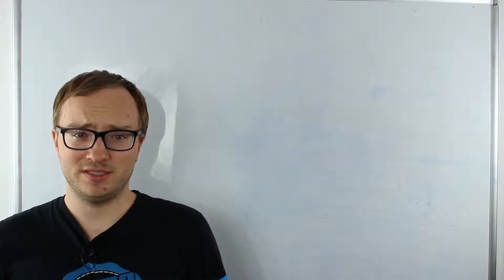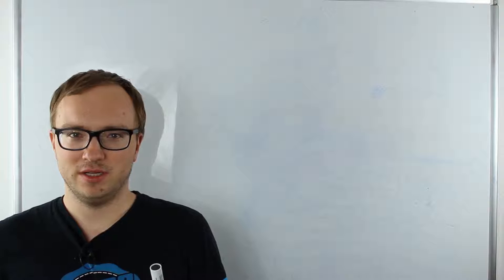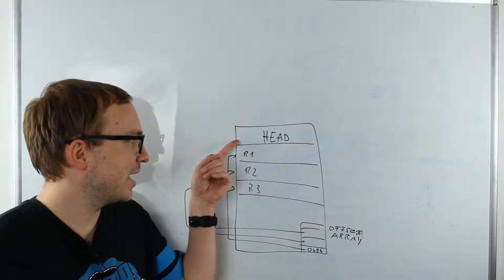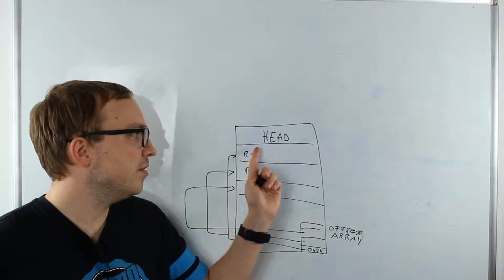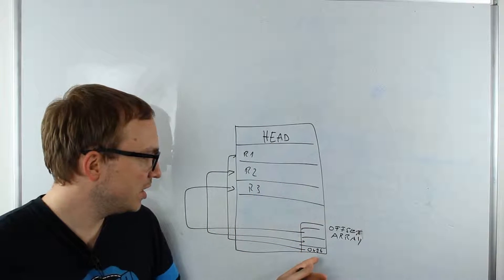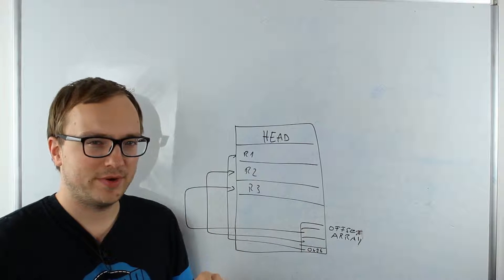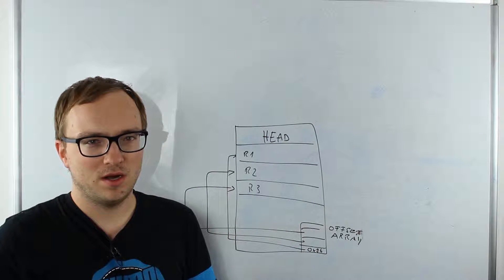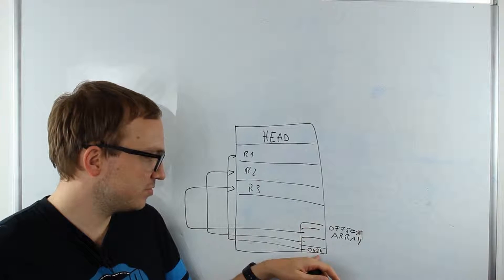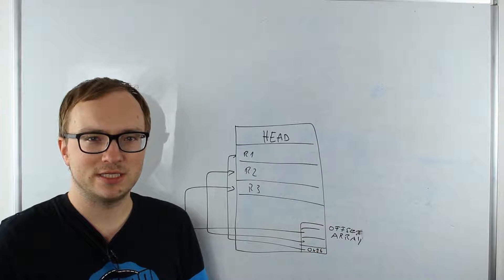So if we have a row in a heap table, we have basically just a row in a data page. If you remember how a data page is structured, we have the header, then we have the rows — assuming we have only leaf levels, which in a heap is always true — and then at the bottom right we have the offset array. The offset array basically tells us how many bytes to skip to find the appropriate row.